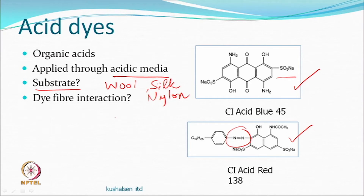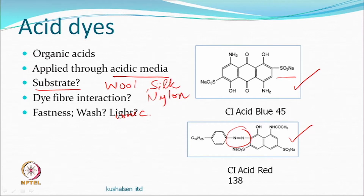Wash fastness can be an issue for acid dyes because they are smaller molecules and ionic bonds in aqueous medium dissociate very easily. Although they are good dyes and print very nicely, wash fastness can be an issue. For printing, a larger molecule with higher molecular weight may be a good idea so that wash fastness improves, because there is no other mechanism of fixation except ionic bonding, unlike reactive dyes.